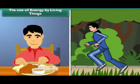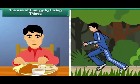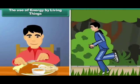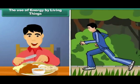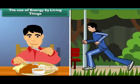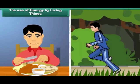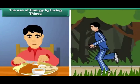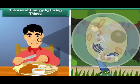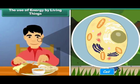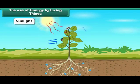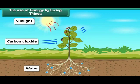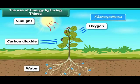Living beings constantly require energy not only to perform various activities of the body, but also to overcome entropy — the degree of disorder in a system, or tendency to randomness. The source of energy is food, required by every cell of the body. Food is prepared by plants through the process of photosynthesis, which requires sunlight, carbon dioxide, water, and chlorophyll.